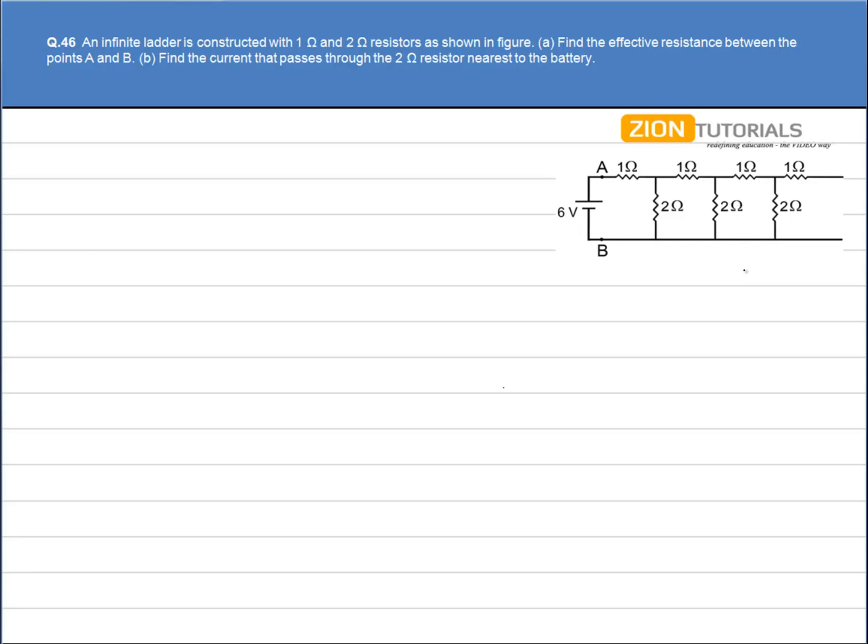An infinite ladder is constructed with 1 ohm and 2 ohm resistors as shown in figure. We have to calculate the effective resistance between point A and B.